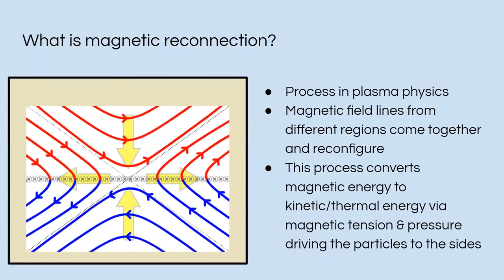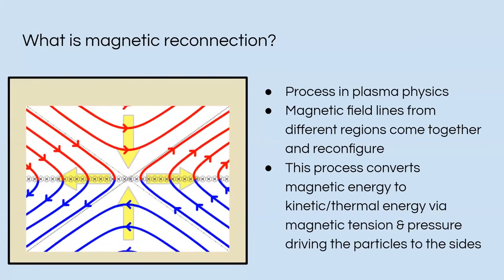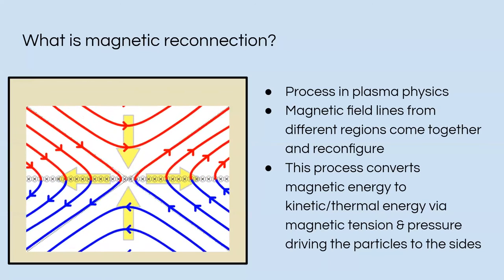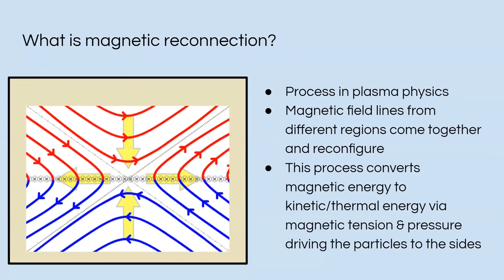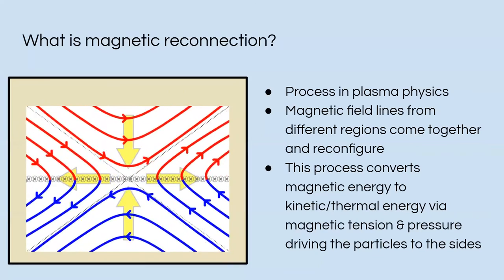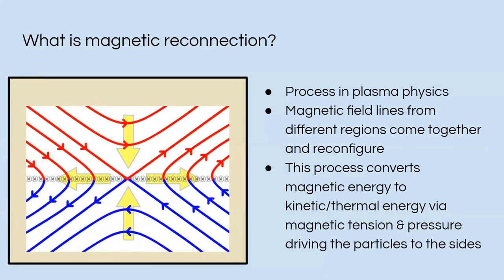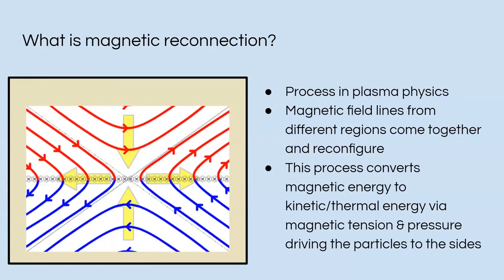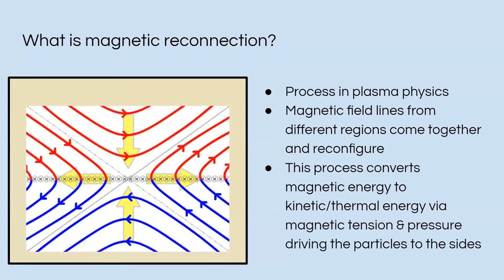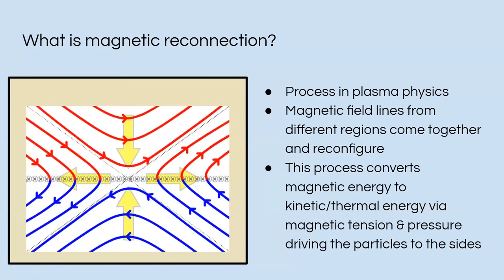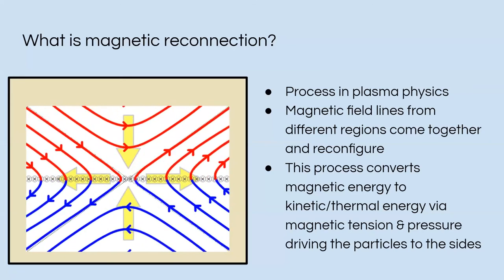All right, so first off, what is magnetic reconnection? It's a process in plasma physics where magnetic field lines will come from different regions. They bend, they break, and they reconnect to the side. The process converts magnetic energy to kinetic and thermal energy when the magnetic tension and pressure drive everything to the sides.